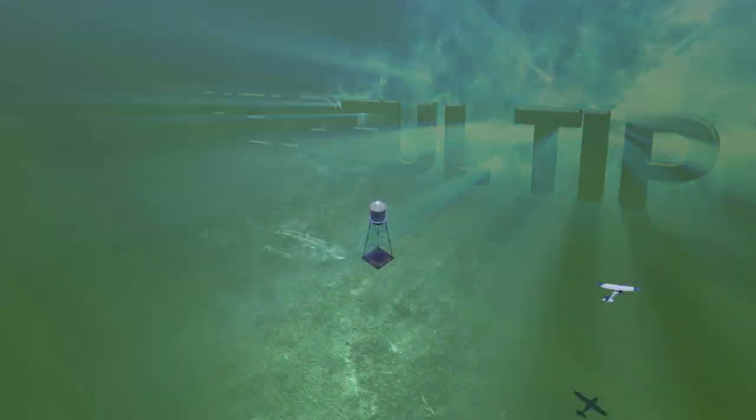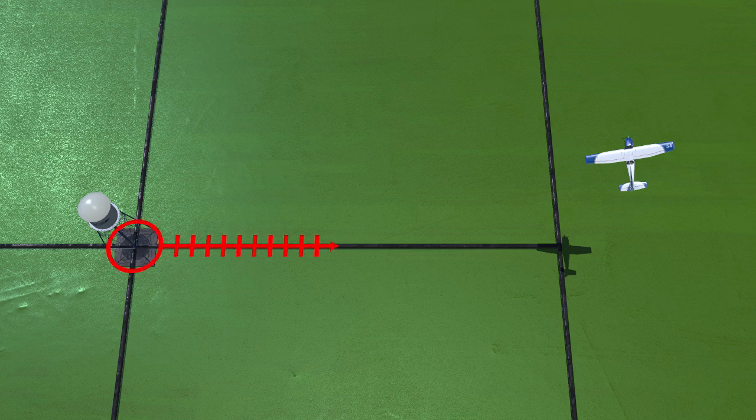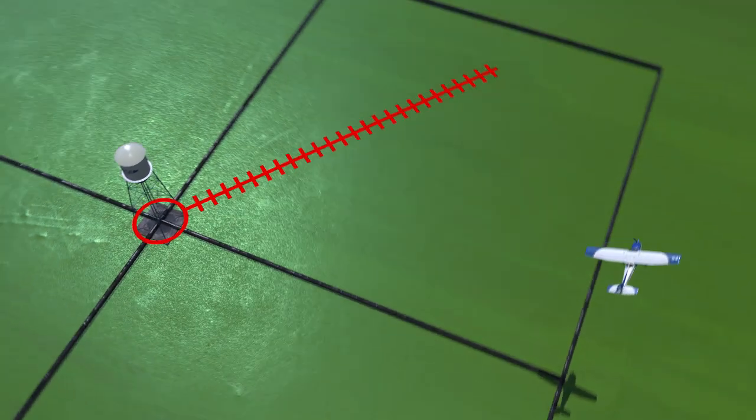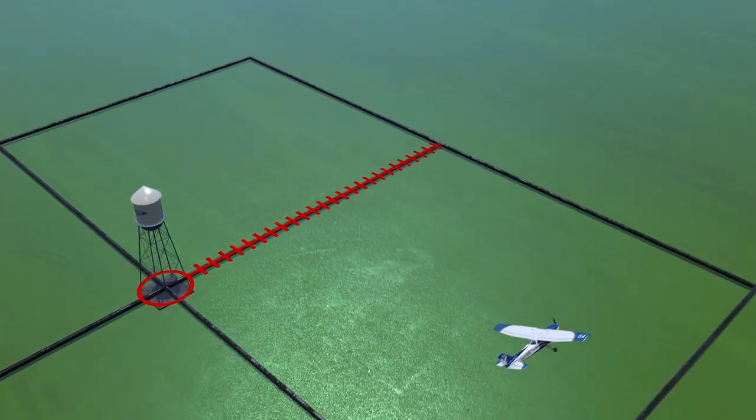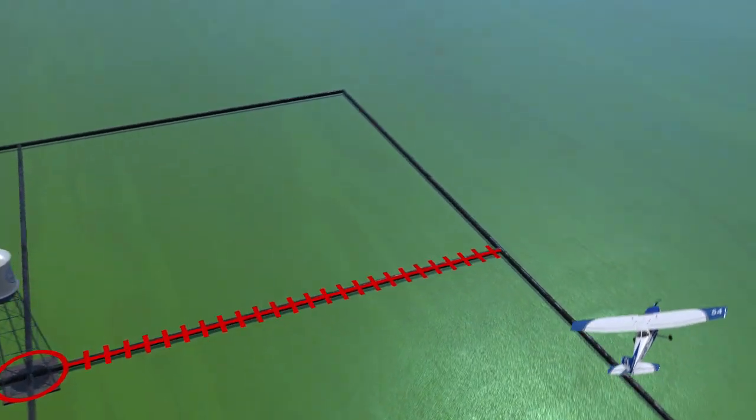You may find wind correction easier to handle if you plan ahead. Note the distance you are from your reference. Then, find a landmark at that same distance, 90 degrees ahead in the circle. Watch for any drift as you attempt to fly over that next landmark.